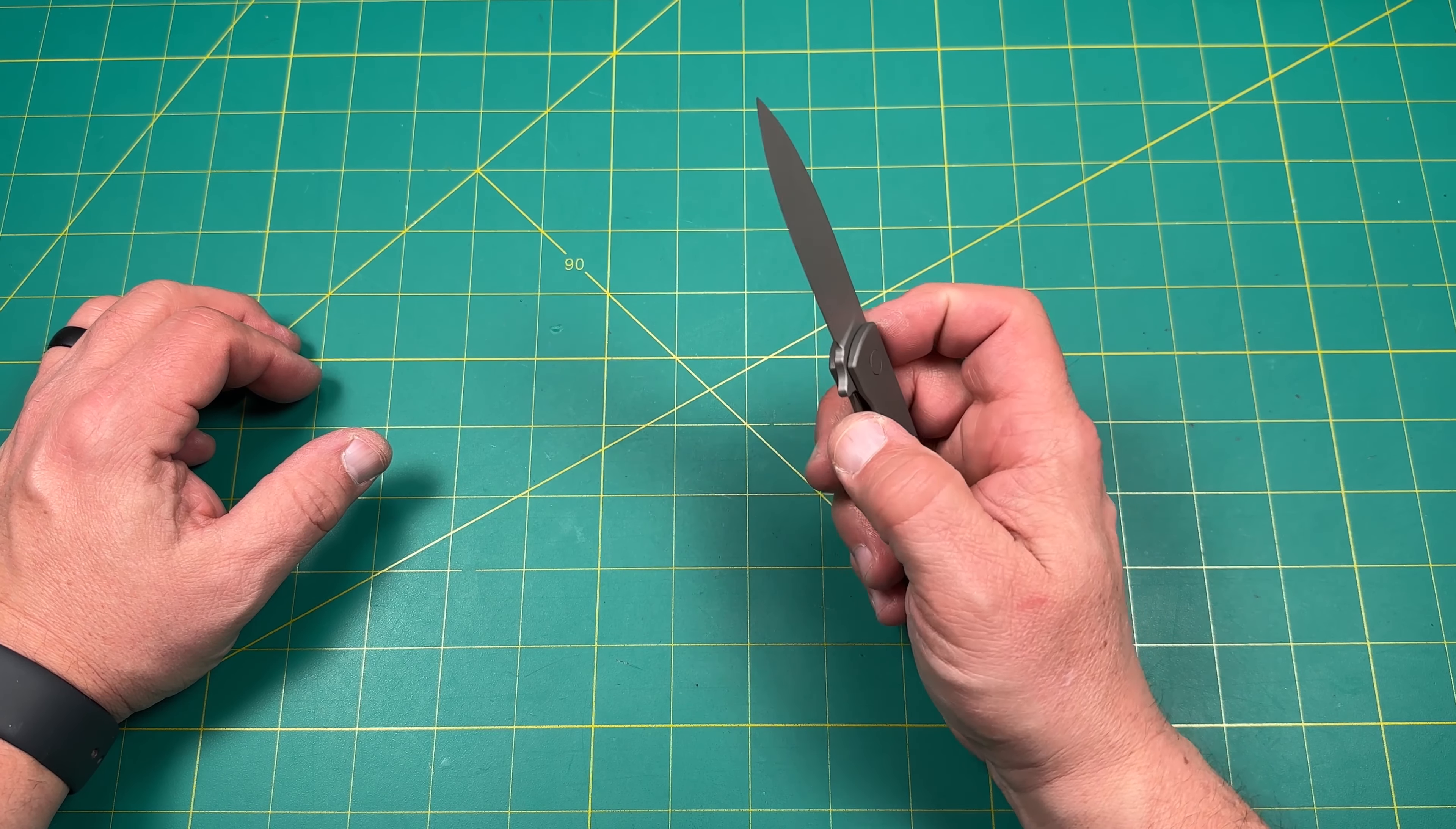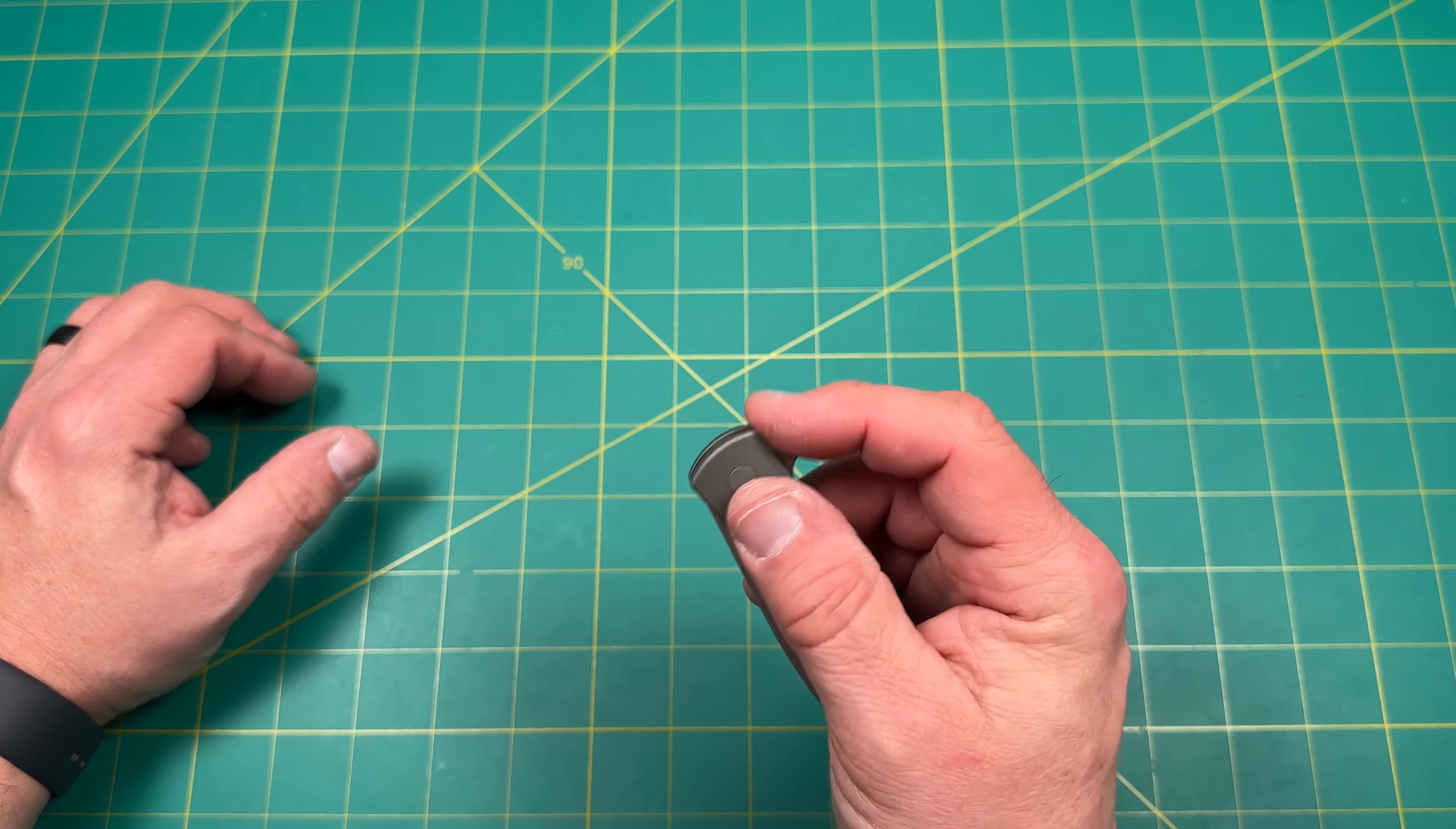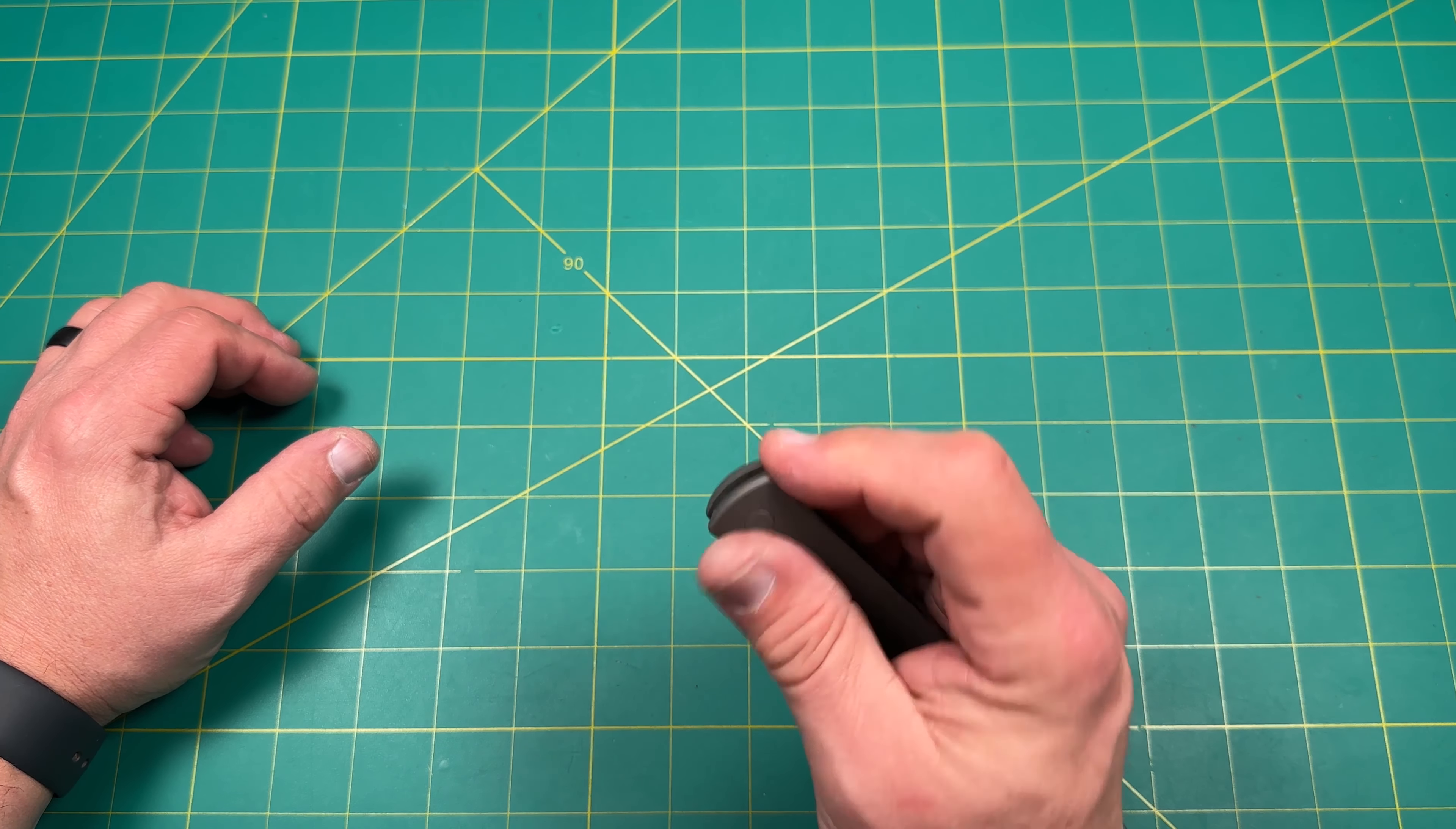It is a flipper, primarily a flipper, and that's been the main way to deploy it. Flipper does have some nice jimping there. Wish the jimping went all out. It's not too bad because it doesn't really slide off because of the texture.